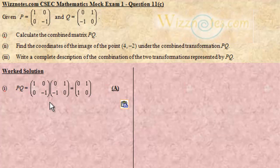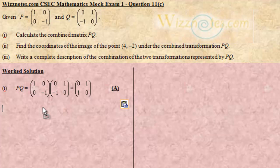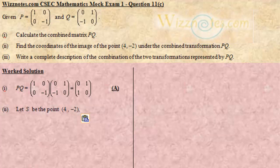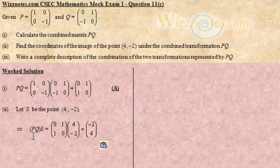Hence the result is [0, 1; 1, 0], and that's the answer for PQ. Part 2 says we have to find the coordinates of the image of the point (4, -2) under the combined transformation PQ. For this section, we will be applying the combined matrix PQ to the vector matrix for the point (4, -2).